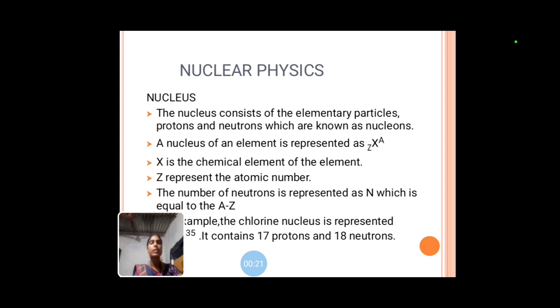Let us see the nucleus. The nucleus consists of elementary particles, protons and neutrons which are known as nucleons. A nucleus of an element is represented as ZX^A. X is the chemical element, Z is the atomic number, N is the neutron number. For example, the chlorine nucleus is represented as 17Cl35. It contains 17 protons and 18 neutrons.